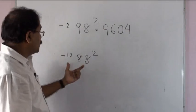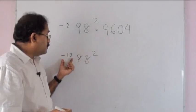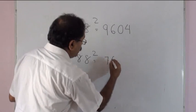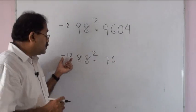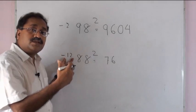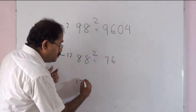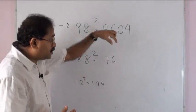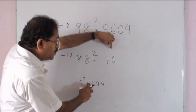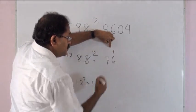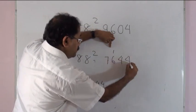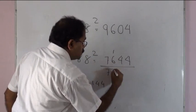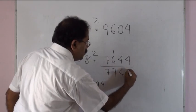But for 88: 88 minus 12 is 76, followed by 12 squared. Now 12 squared is 144, which is a 3-digit number. I can't place 3 digits in the last two positions, so the 1 carries over. 44 stays, and 76 plus 1 gives 77. Therefore 88 squared equals 7744.